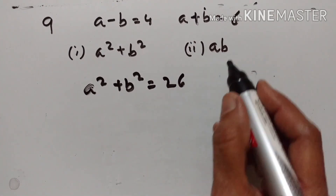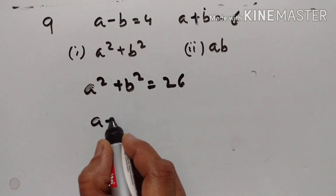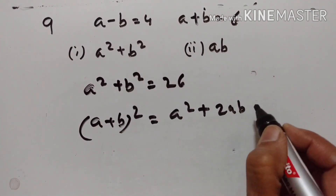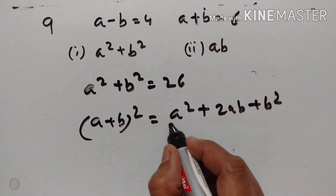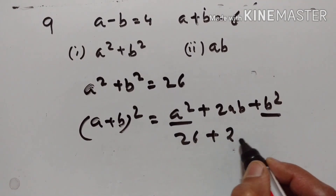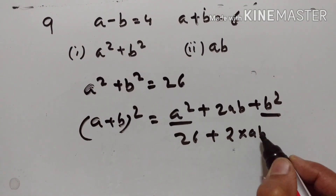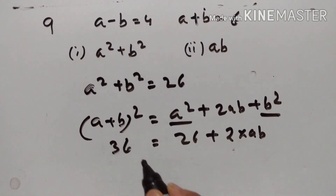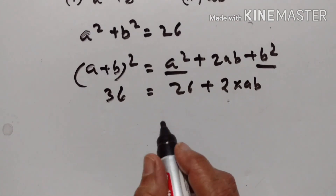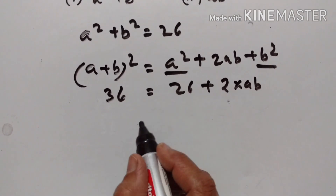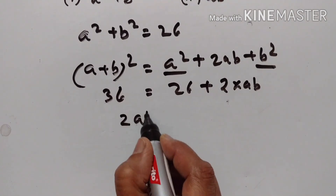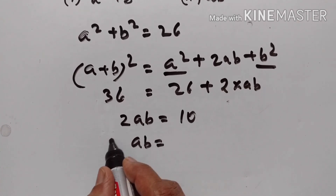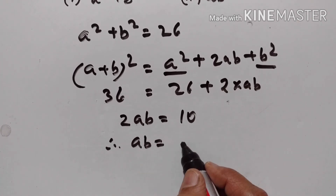Now we have to find AB. (A+B)² = A² + 2AB + B². A² + B² = 26, and A+B = 6 so (A+B)² = 36. Therefore 36 = 26 + 2AB, so 2AB = 36 − 26 = 10. Therefore AB = 10 ÷ 2 = 5.